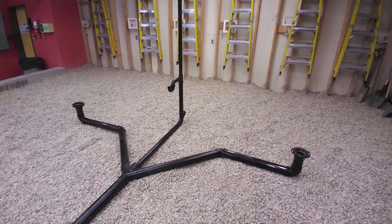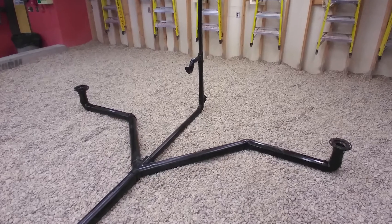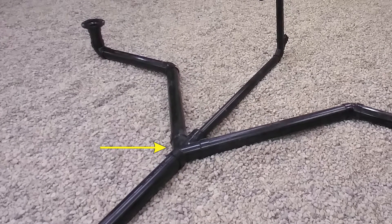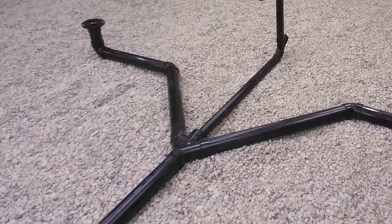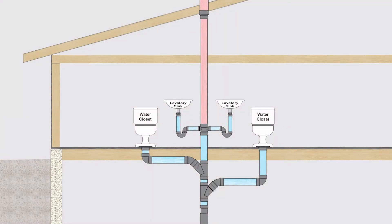This clause also covers joining two water closets into a horizontal piping arrangement. When doing this, you must use a double Y fitting as shown in this picture. If you used a double TY instead in this scenario, you would fail your inspection. The key takeaway: joining two water closets into your wet vent is fine, but only if you use a double fitting. Using separate TYs or Ys would fail your inspection.